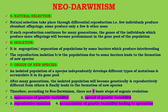An isolated population of a species independently develops different types of mutations and accumulates them in its gene pool. After many generations, the isolated population will become genetically and reproductively different from others, finally leading to the formation of new species. Therefore, according to Neo-Darwinism, there are four basic steps of organic evolution: appearance of genetic variability, spread of genetic variability, reproductive isolation, and accumulation of genetic variability leading to speciation.